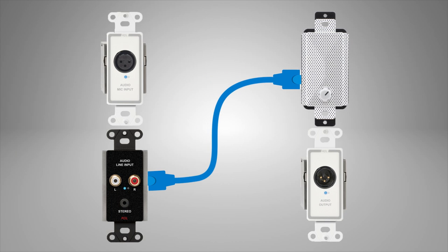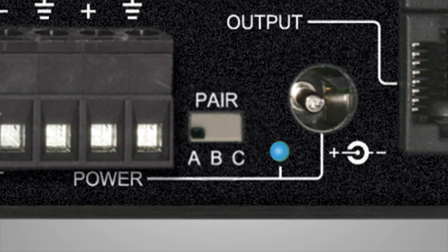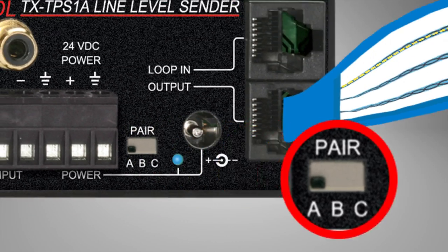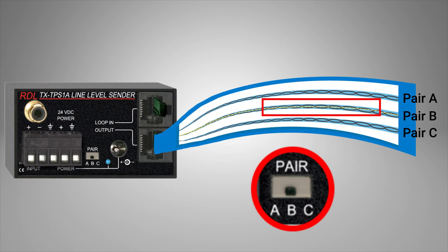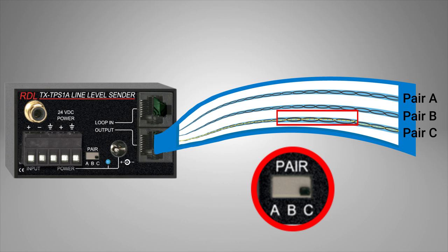Select the endpoint module that provides the type of audio connection needed at a location and connect it. A switch set during installation routes audio to or from cable pair A, cable pair B, or cable pair C.